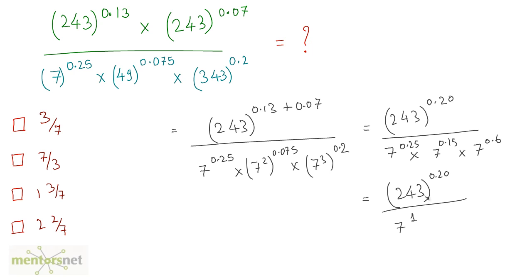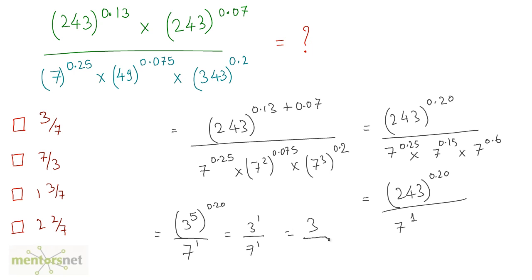Now, the fifth power of 3 is 243. To find that, write 243 as a product of prime factors and you will know it is the fifth power of 3. So this equals 3 raised to 5, raised to 0.20, divided by 7 raised to 1. That equals 3 raised to 5 times 0.2, and 5 times 0.2 is 1. So 3 raised to 1 upon 7 raised to 1, which is 3 by 7. That is our answer.